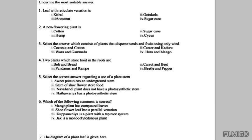Third one: Kappurumania is a plant with a tap root system. Yes. Fourth one: jack is a monocotyledonous plant. No, jack is a dicotyledonous plant because they have a branched stem, tap root system, and reticulate venation. So here the answer should be third one.